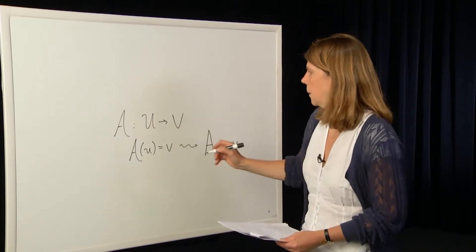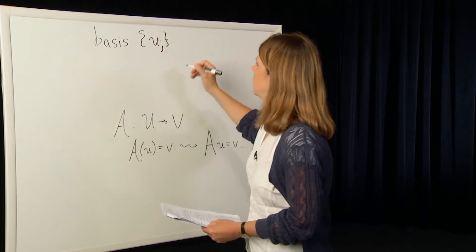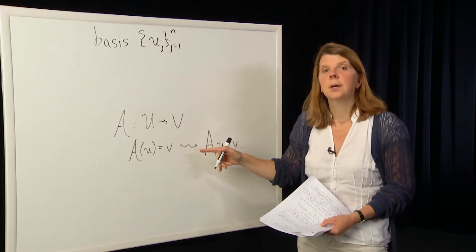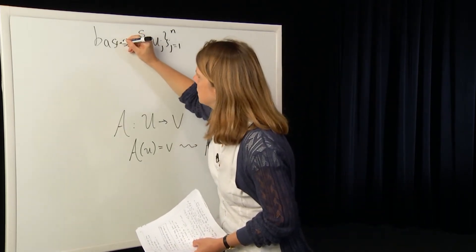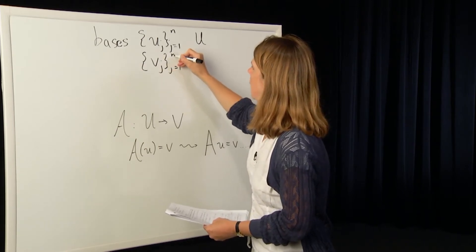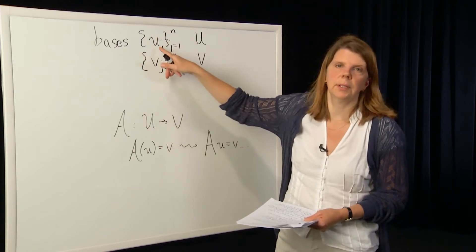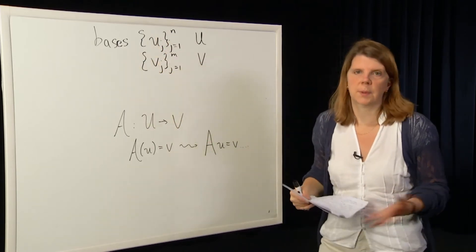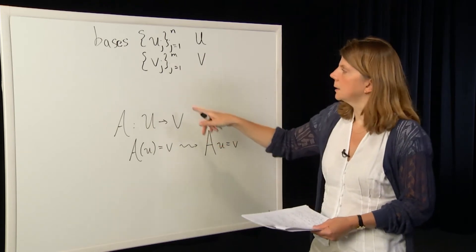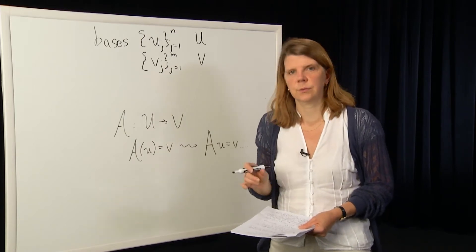We'll use a basis for U — a set of vectors u_1 up to u_N — assuming U is an n-dimensional vector space, and a basis v_j for j equals 1 to M for V, an m-dimensional vector space. Any vector in U can be represented as a linear combination of the basis elements, and similarly for V. Once you've chosen the basis, the coordinates of any vector are unique with respect to that basis.